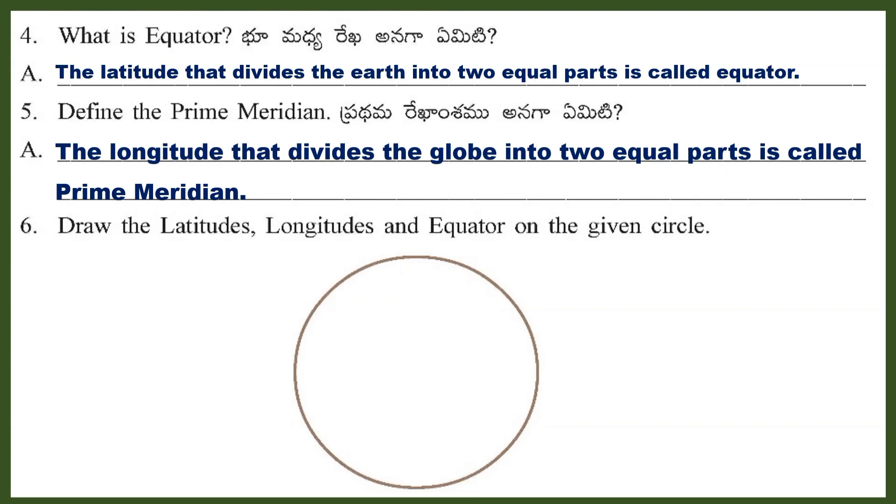Question 6: Draw the latitudes, longitudes, and equator on the given circle.